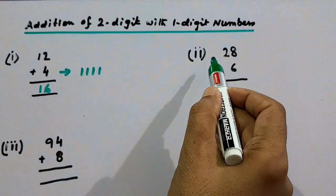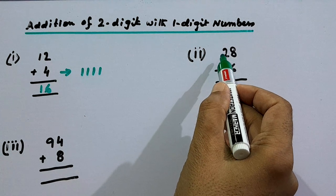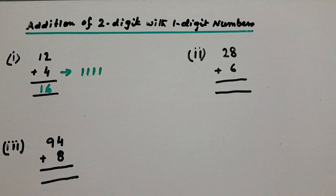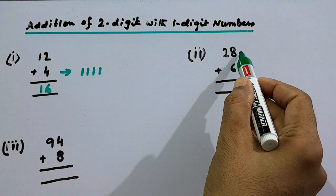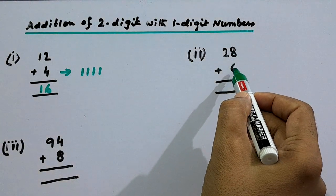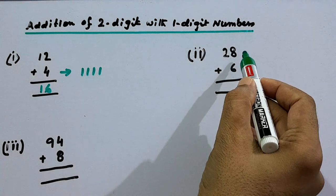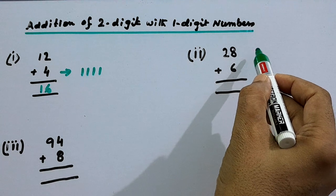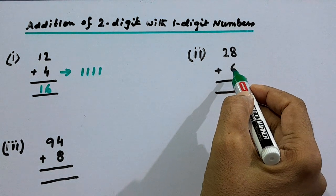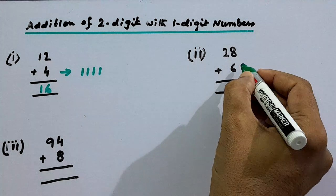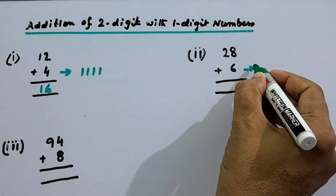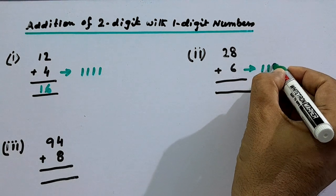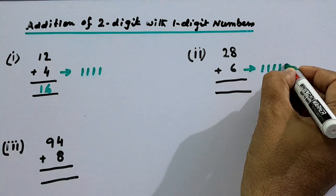Now another example: we have to add 28 with 6. Here 28 is the two-digit number and 6 is the single-digit number. We will not draw lines against the bigger number because it will be too many lines. Against the single-digit number, we will draw 6 lines: 1, 2, 3, 4, 5, 6.